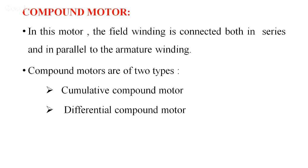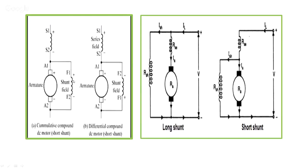In a compound motor, the field winding is connected both in series and in parallel with the armature winding. It is of two types: cumulative compound motor and differential compound motor. As you can see, across the armature the shunt field is present, and in series with the armature the series field is present — both series field and shunt field are utilized in its construction.